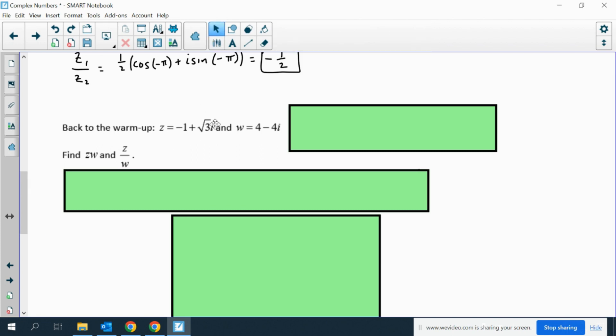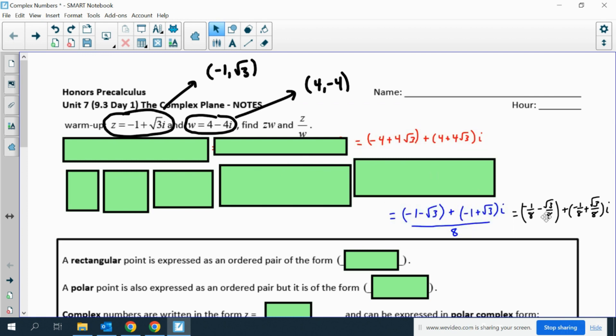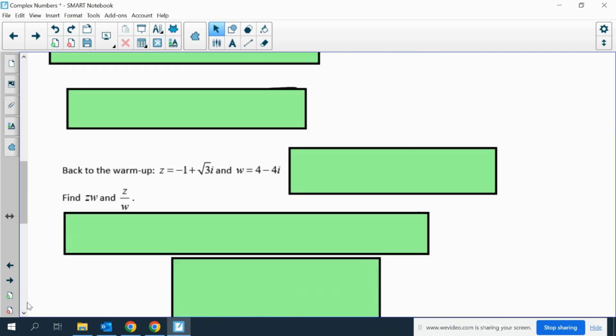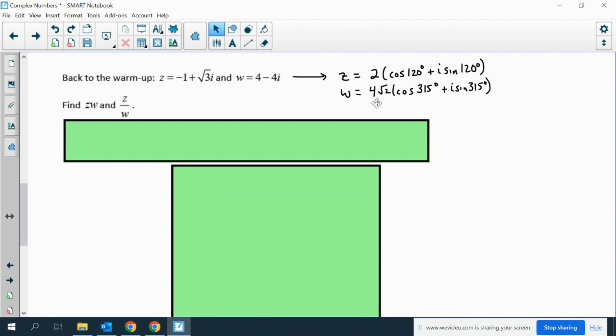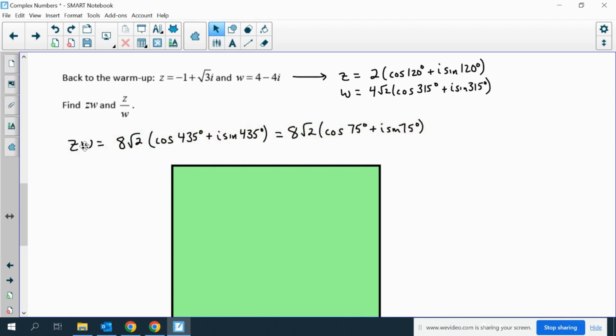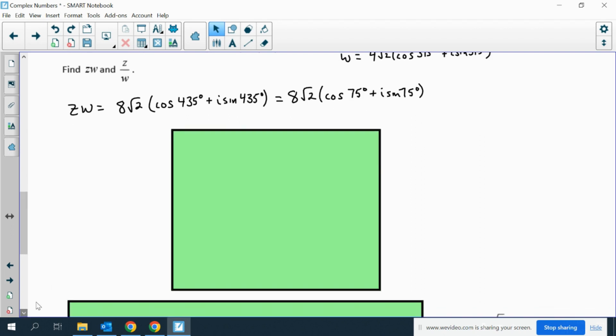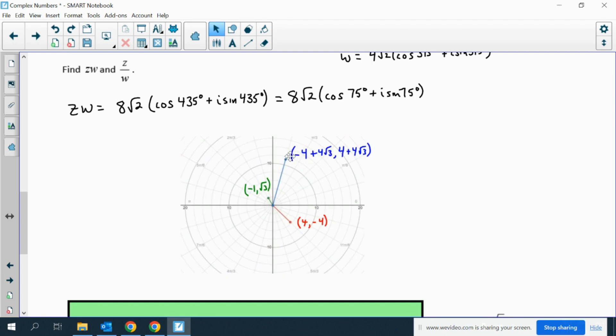Now back to the warm-up. Remember how difficult these problems were. I ended up getting some nasty looking answers. Well, I can rewrite these in their polar form. And if I rewrite them in their polar form, it actually ends up not being too bad. If you multiply z times w, it's just 2 times 4 root 2, which is 8 root 2. Then you add the angles, you get 435. And if you want to put it in 0 to 360, you get 75 degrees. So you can actually graph it pretty quick. Circle of radius 8 root 2 and 75 degrees, so that would be right about here.